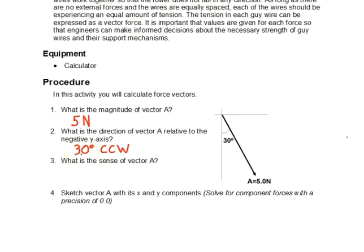Then, question 3, what is the sense of vector A? That is, where we just simply say, down and to the right. Simple as that.